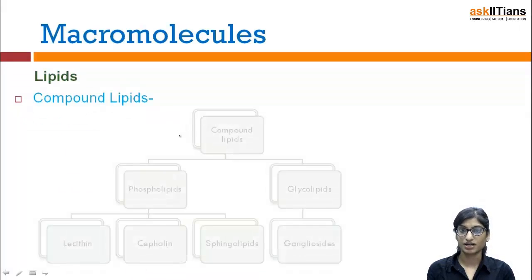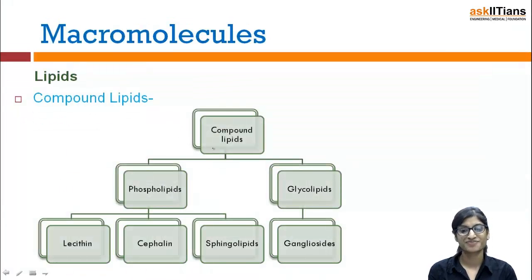Categorization first. Compound lipids are categorized into phospholipids and glycolipids. Phospholipids are further categorized on the basis of which specific group is present: lecithin, cephalin, and sphingolipid. In glycolipids, we will learn about gangliosides. Let's study phospholipids.